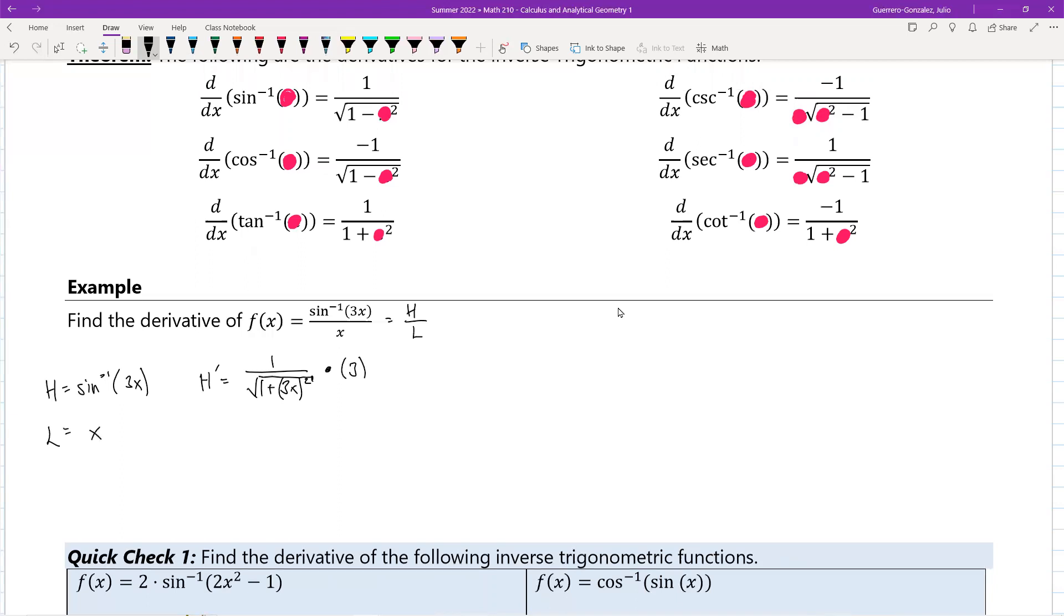My low is just x, so then my low prime is equal to 1.